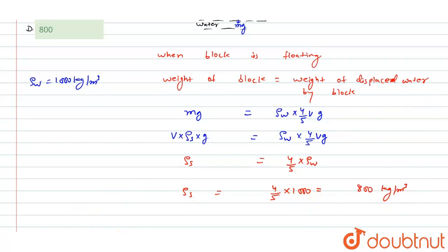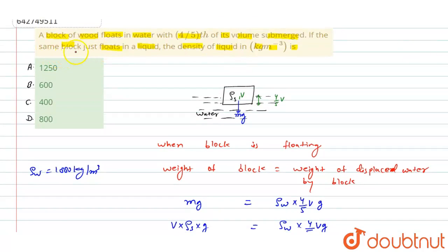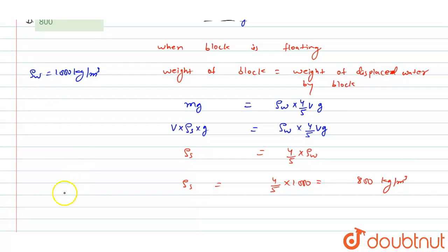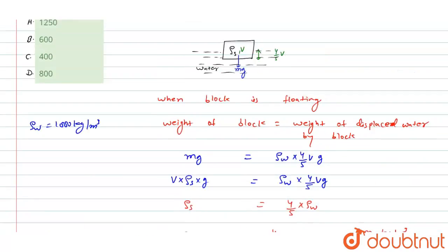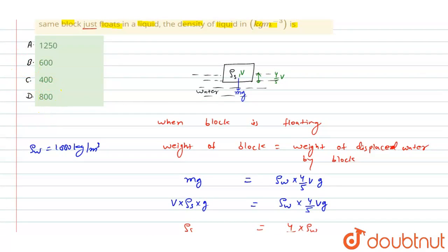Now for the second condition: the block just floats in the liquid. Just floating means the density of the block equals the density of the liquid. Since ρs = 800 kg/m³, the density of the liquid is also 800 kg/m³. So option (d) 800 is the correct answer. I hope you understood the solution.